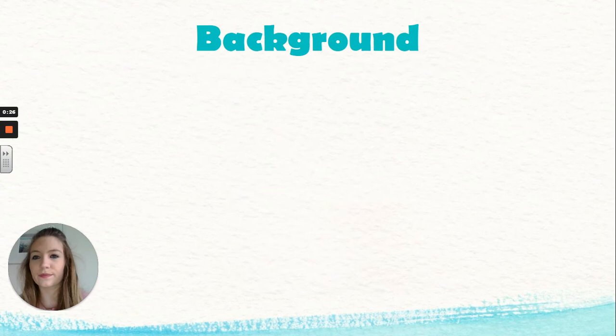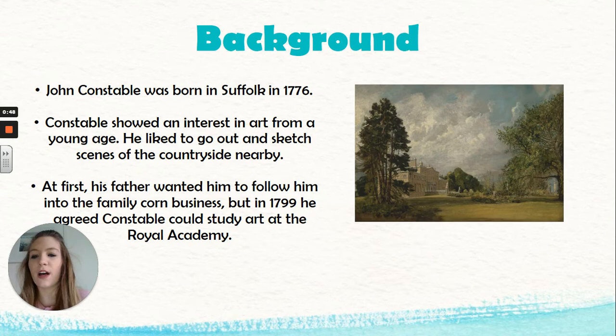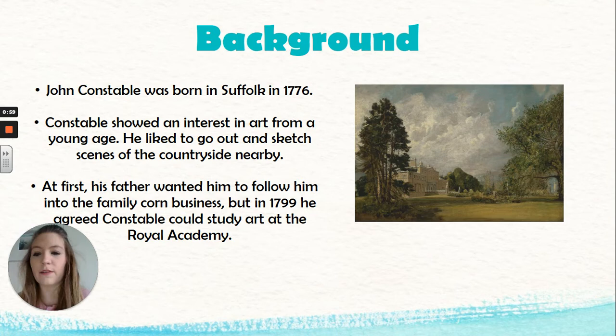Now let's move on to looking at some background information on him. John Constable was born in Suffolk in 1776. He showed an interest in art from a very young age and liked to go out and sketch scenes of the nearby countryside. At first his father wanted him to follow him into the family corn business, but in 1799 he agreed that he could go and study art at the Royal Academy. John Constable was very happy about that because it meant that he could study what he was most passionate about.